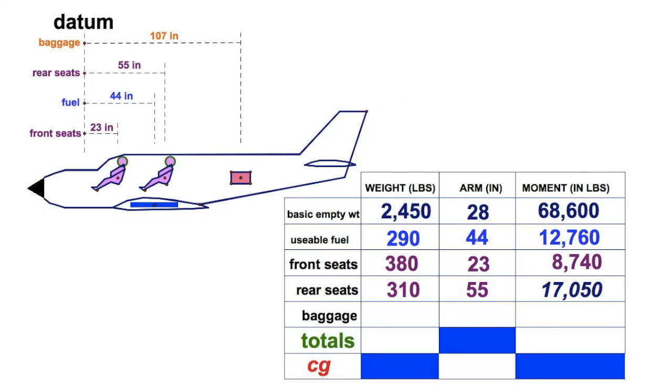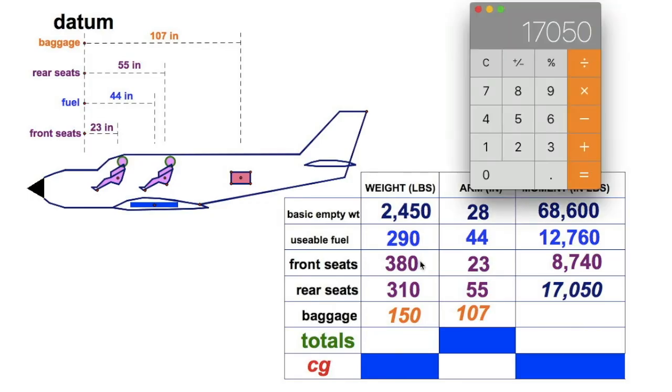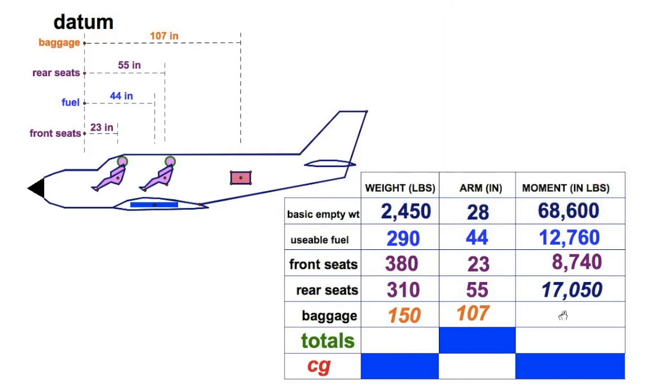Then we're going to take our baggage. A lot of times we have a baggage limit. It's not a lot of weight, but it's way back there, 107 inches aft. Watch what this does to the moment. 150 times 107 is going to equal 16,050. You know what we got to do, we got to add them all up.